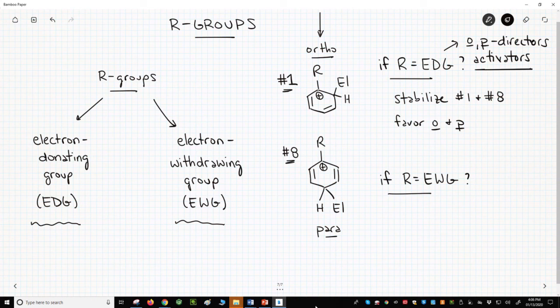Okay, how about electron-withdrawing R-groups? Well, if R is an electron-withdrawing group, then the R-group should destabilize structures one and eight. That means ortho and para products will be disfavored. We should instead get the meta-isomer. Not because meta is favorable, but because it's not disfavored.